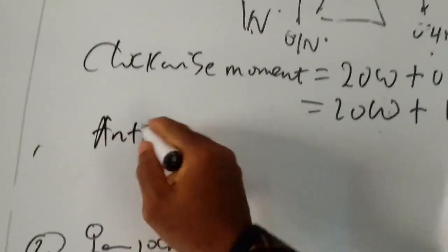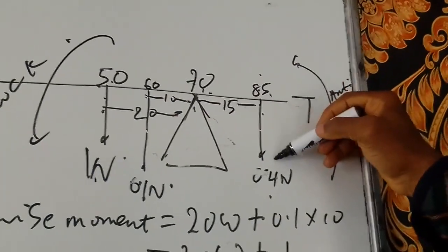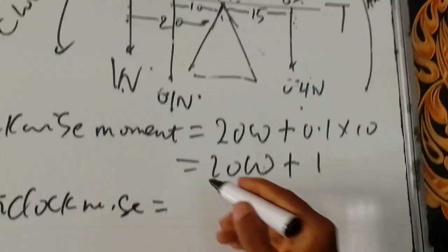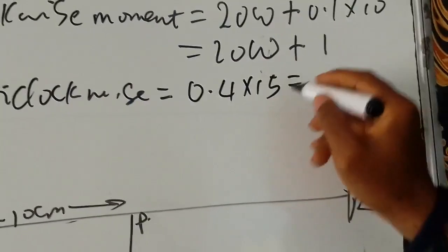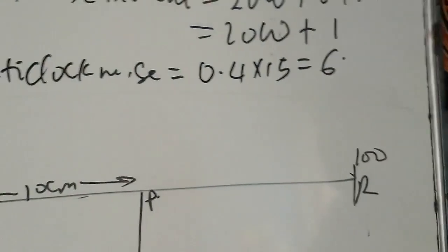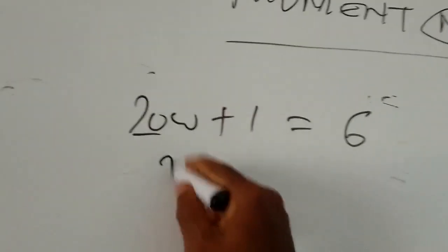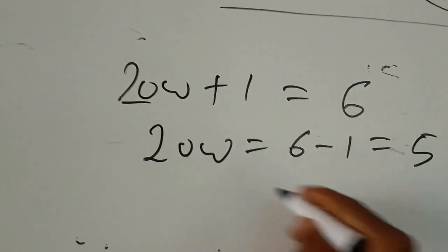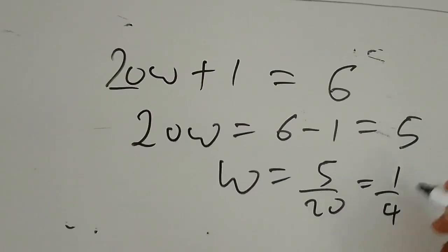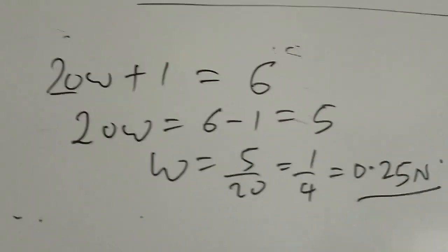For anti-clockwise moment, there is only one force on the other side: 0.4, and its distance to the pivot is 15. So anti-clockwise is 0.4 times 15, which gives 6. Applying the principle of moments — clockwise moment equals anti-clockwise moment — we get 20W plus 1 equals 6. Collecting like terms: 20W equals 5, so W equals 5 over 20, which is 0.25 Newton. This is the weight of the meter rule, and the correct answer is option A.